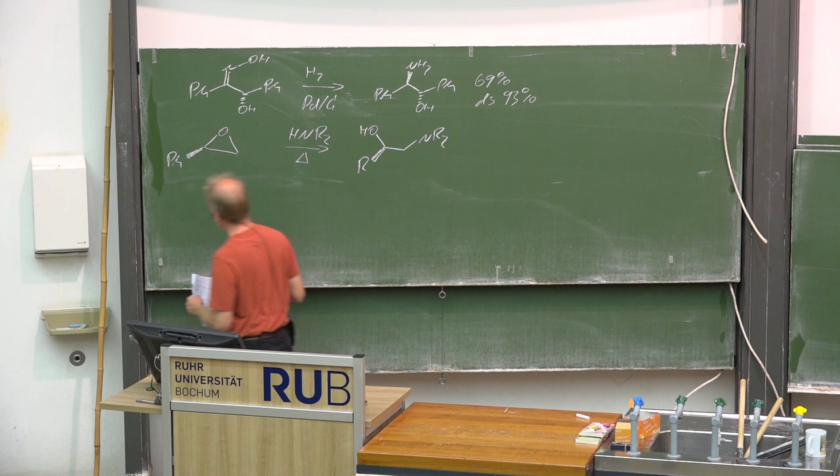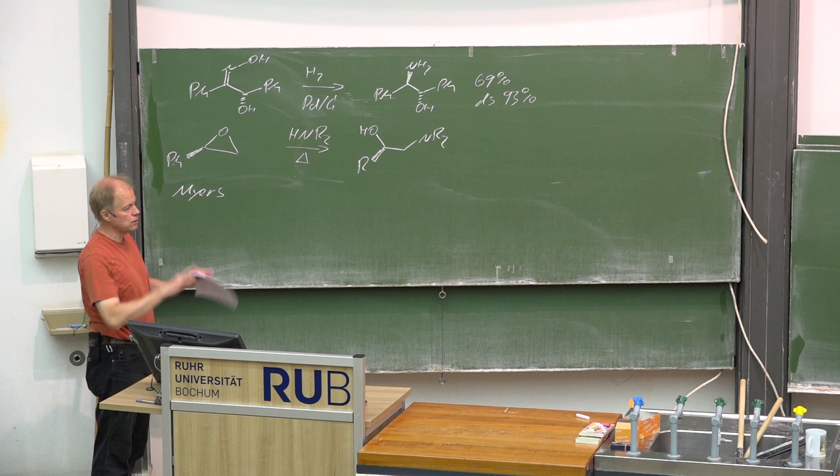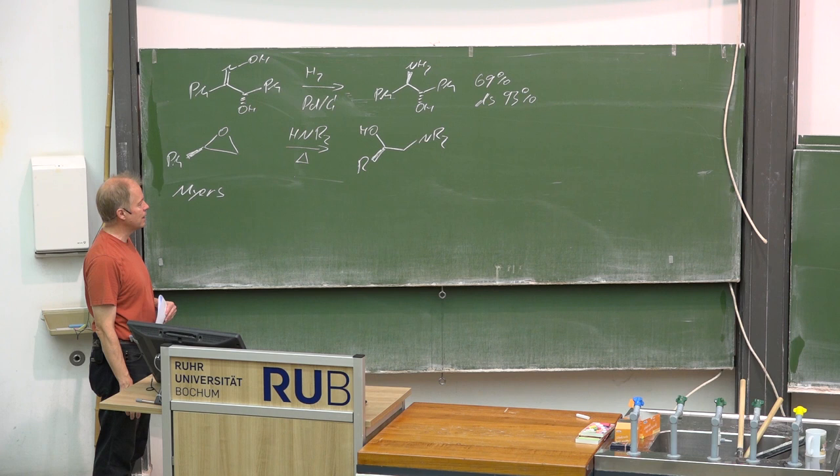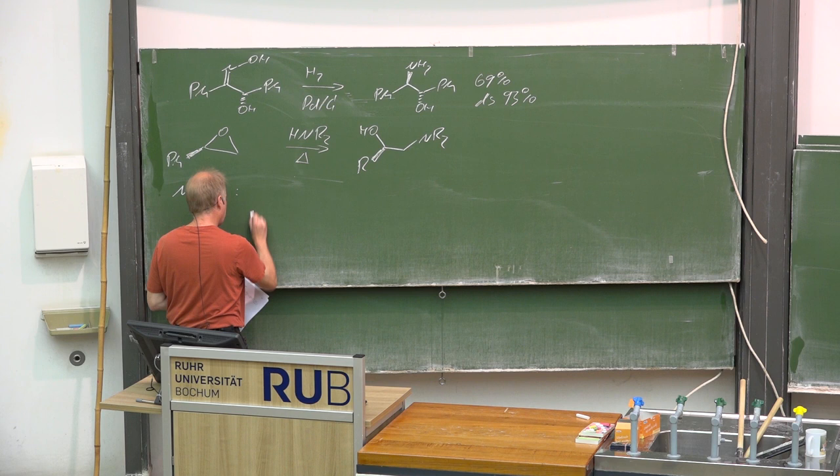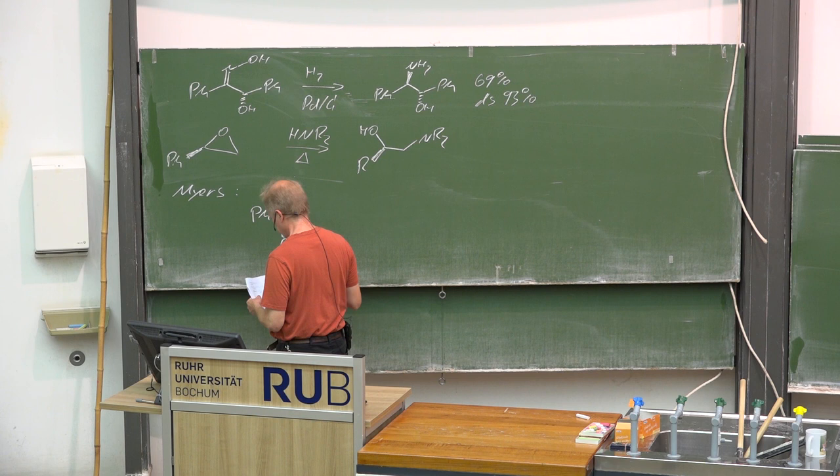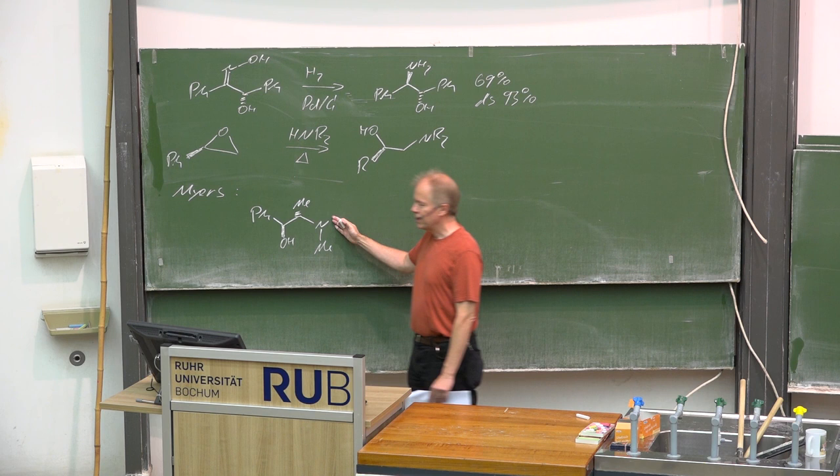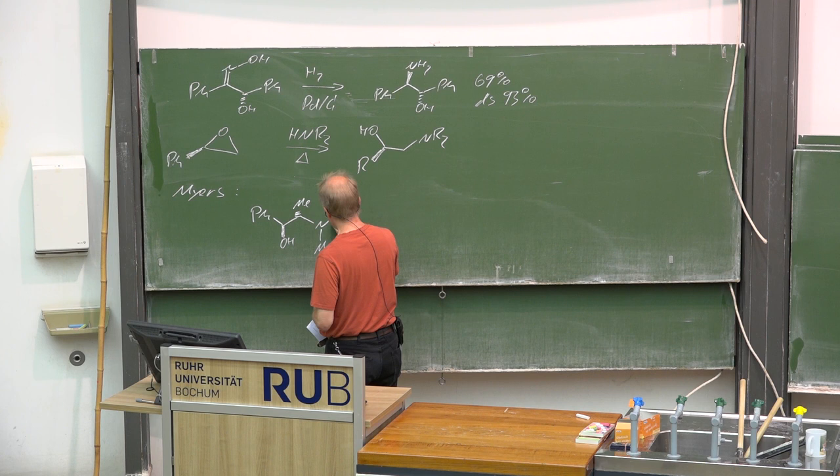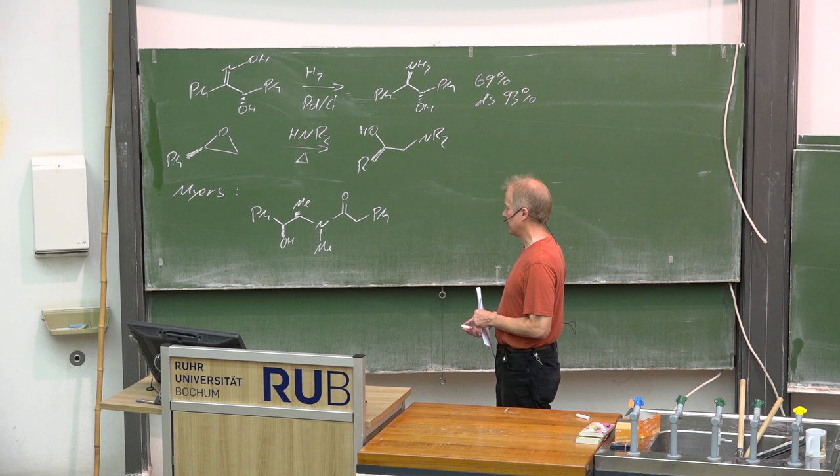An early example of introducing a chiral amino alcohol into an organic molecule and using that amino alcohol as a chiral auxiliary was presented from Myers' group. He made use of this chiral amino alcohol by an acylation, then applying the acid chloride and an additional base, triethylamine for instance.